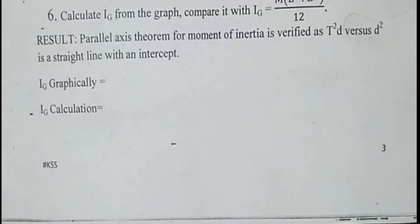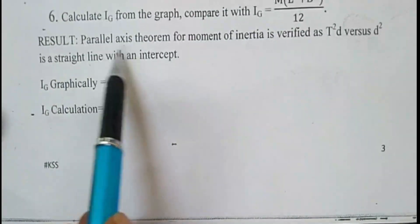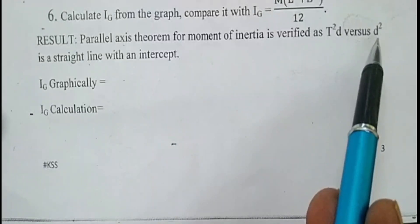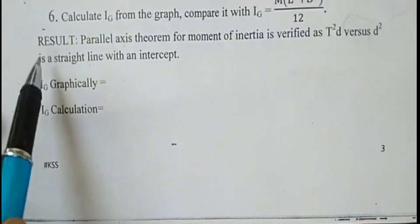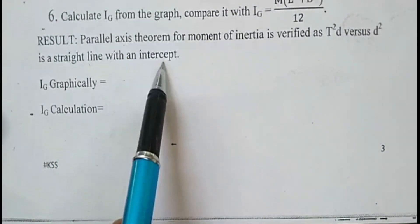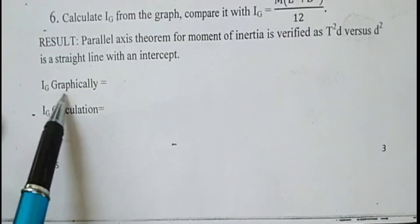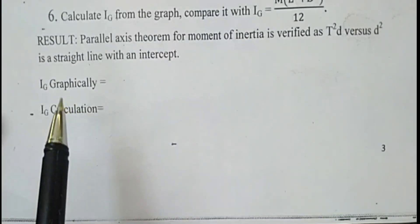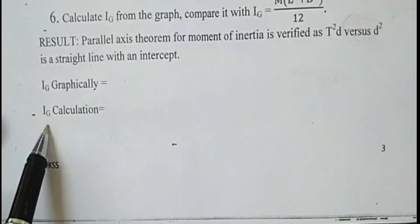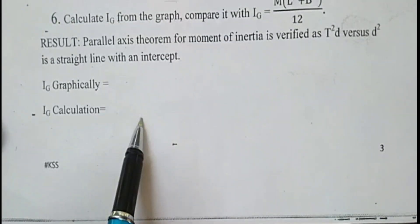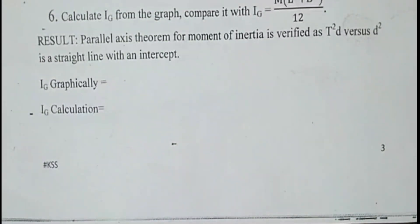After completing the experiment, write the result: the parallel axis theorem for moment of inertia is verified, as the T²D versus D² graph gives a straight line with an intercept. Using that intercept, Ig is calculated graphically. Similarly, using mass, length, and breadth, Ig is calculated by formula. These two values are compared, which verifies the parallel axis theorem.